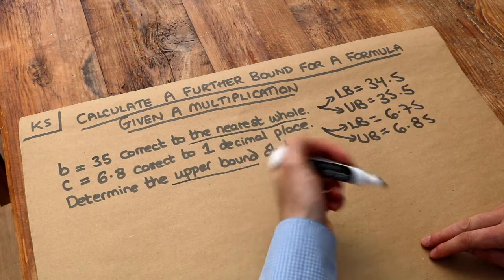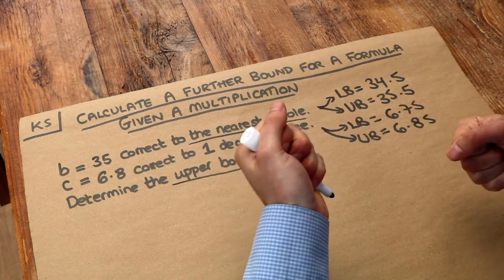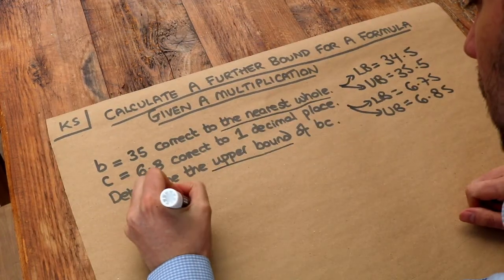Now you might be able to see that if we're timesing two numbers we want to times the biggest two numbers together possible in order to get a big number. So the upper bound of BC